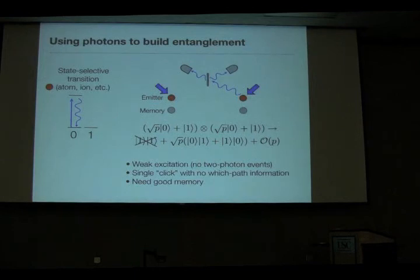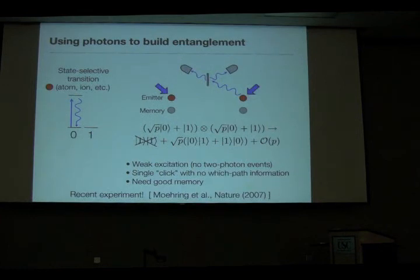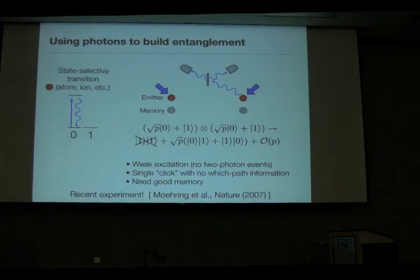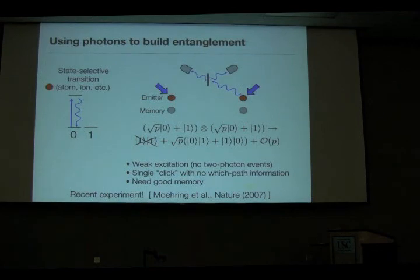The first experiment really demonstrating this with ions has been done recently in Chris Monroe's group — you can read about it in Nature. It's quite a beautiful experiment. This proof-of-principle experiment has an extremely low success rate; their rates were less than one per second. But it could be improved by about four orders of magnitude with their current experimental setup, so you can really start to think about generating entangled pairs at some finite distance with reasonable bit rates.